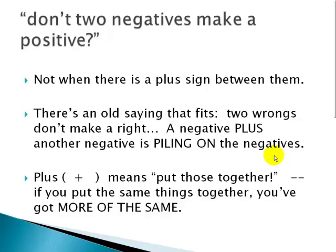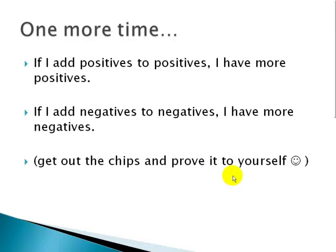Now, don't two negatives make a positive? We'll talk about that more later, but the answer is not when there's a plus sign between them. There's an old saying that fits: two wrongs don't make a right. A negative plus another negative is piling on the negatives. Plus means put those together. If you put the same things together, you've got more of the same. So one more time, if I add positives to positives, I have more positives. If I add negatives to negatives, I have more negatives. Get out the chips. Prove it to yourself.